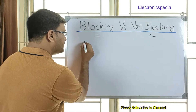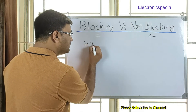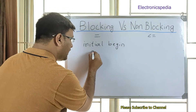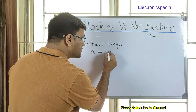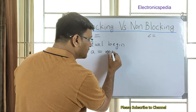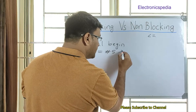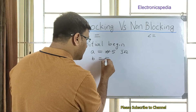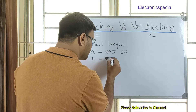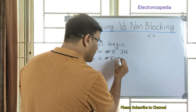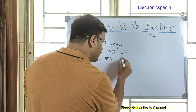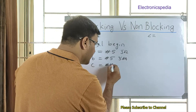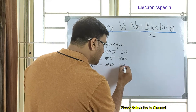So in the first example this is an initial block. A is assigned with a #5 delay and gets a value of 3'd2. Then B is assigned with a #5 nanosecond delay and gets 3'd4. C is assigned with a #10 nanosecond delay and gets 3'd5. This is the blocking statement version.